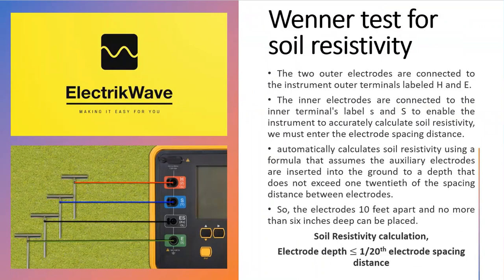The two outer electrodes are connected to the instrument outer terminals, labeled H and E. The inner electrodes are connected to the inner terminals, labeled S and ES. To enable the instrument to accurately calculate soil resistivity, we must enter the electrode spacing distance. The instrument automatically calculates soil resistivity using a formula that assumes the auxiliary electrodes are inserted into the ground to a depth that does not exceed 1/20th of the spacing distance between electrodes — so the electrodes 10 feet apart and no more than 6 inches deep.